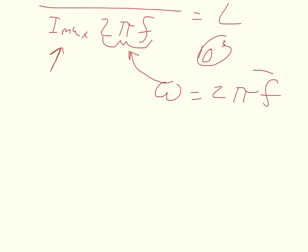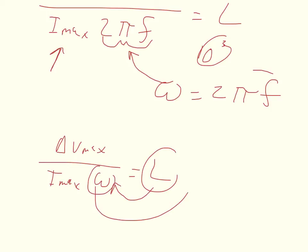So at this point, I can just simply take this and substitute it in for this quantity here. And then once the substitution is done, you get delta V max over I max times omega is equal to the inductance. And then we just have to move omega over here, or move inductance over here, move omega out here, and we'll have our symbolic answer. Delta V max over I max times the inductance is equal to the angular speed.